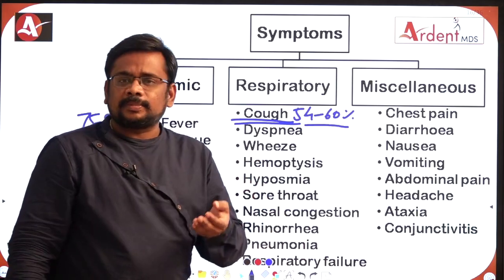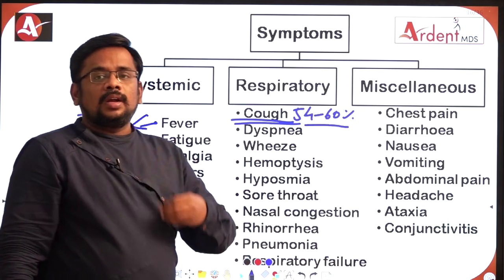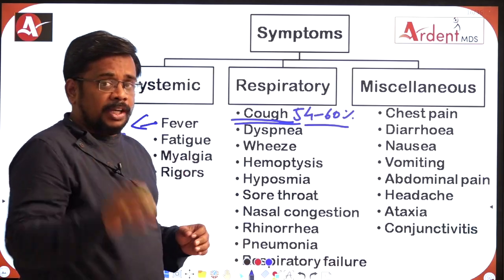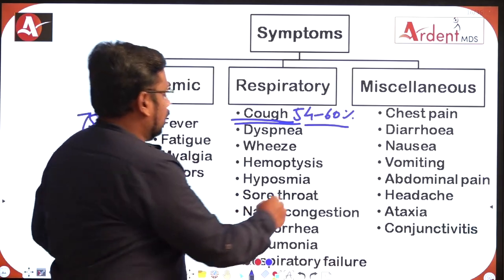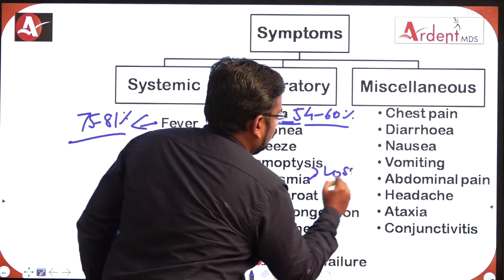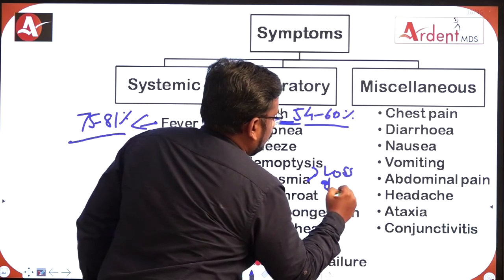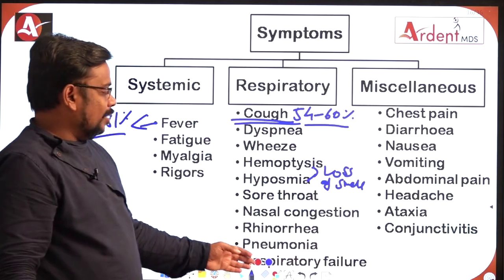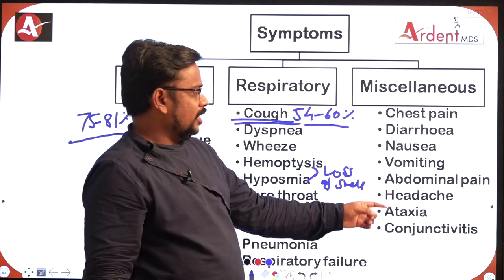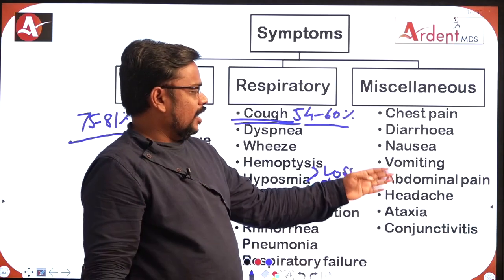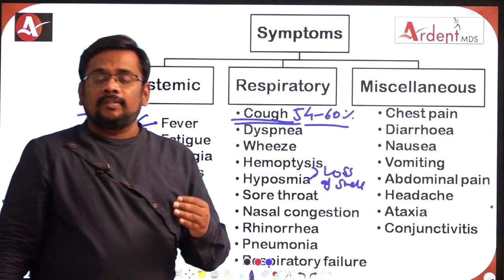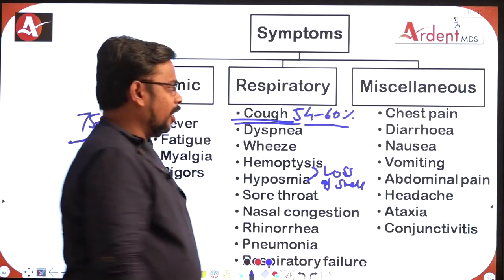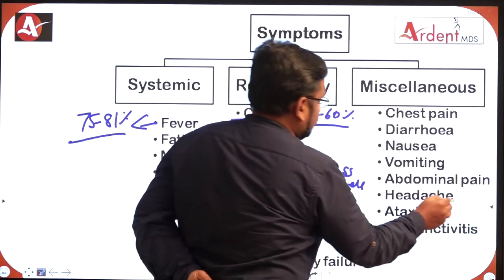Hyposmia is loss of smell; the patient may also go for rhinorrhea, pneumonia, and respiratory failure. Coming to the miscellaneous symptoms: diarrhea, nausea, vomiting, and headache. Around 10 to 16% of patients may go for headache.